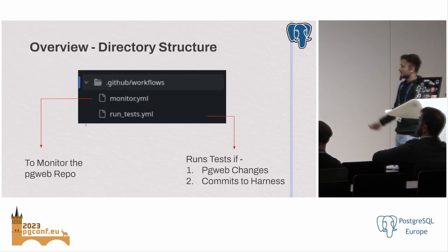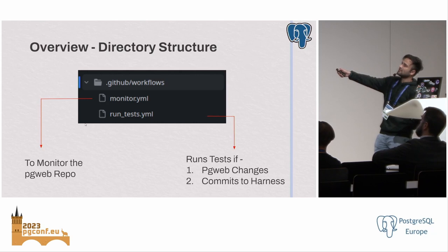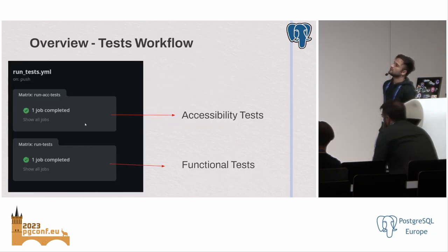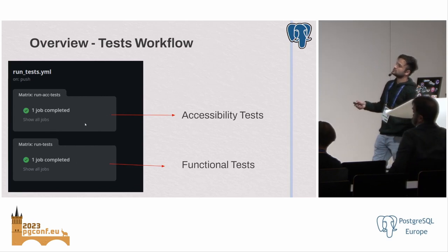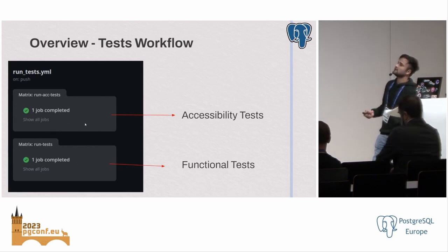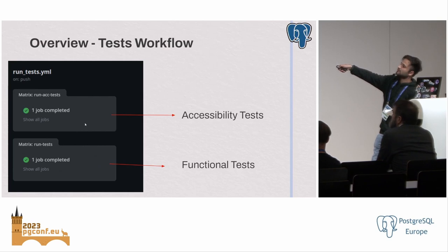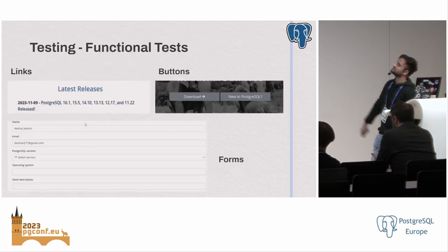The run_test.yaml file consists of all the code to run the tests. We have two jobs running in parallel: one for the accessibility tests and another job to run the functional tests.